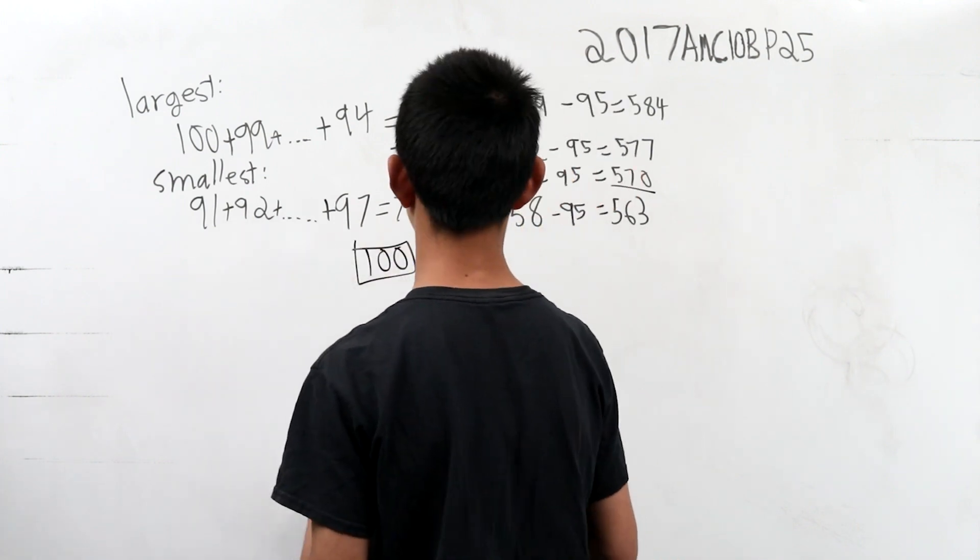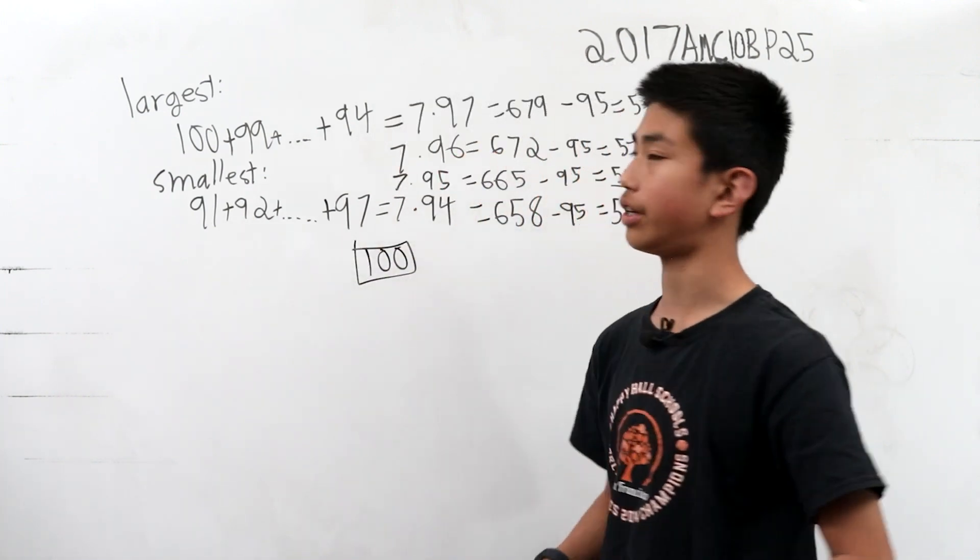Because when you subtract 100 from it, it's going to get the only multiple of six. That is our answer.